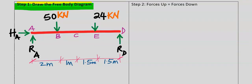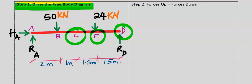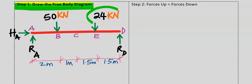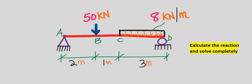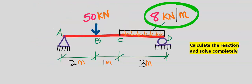When we redraw this, we get the free body diagram, which is step number one. The uniformly distributed load that covered from C to D is now acting as a concentrated load at a new point, and we calculate with 24 kilonewtons, not 8 kilonewtons per meter. The unit of a uniformly distributed load is kilonewtons per meter, but the unit of a force is kilonewtons.